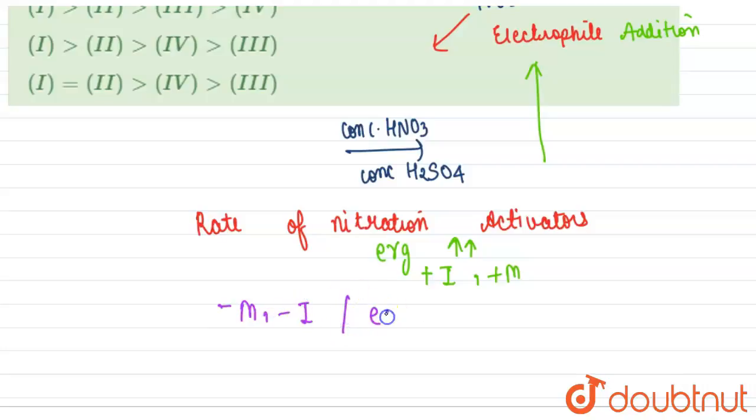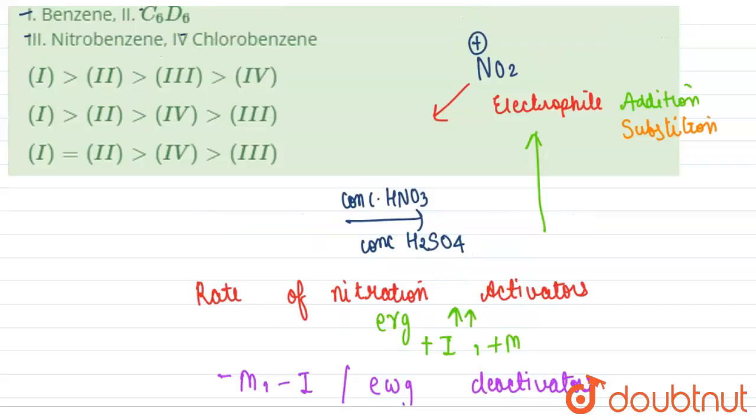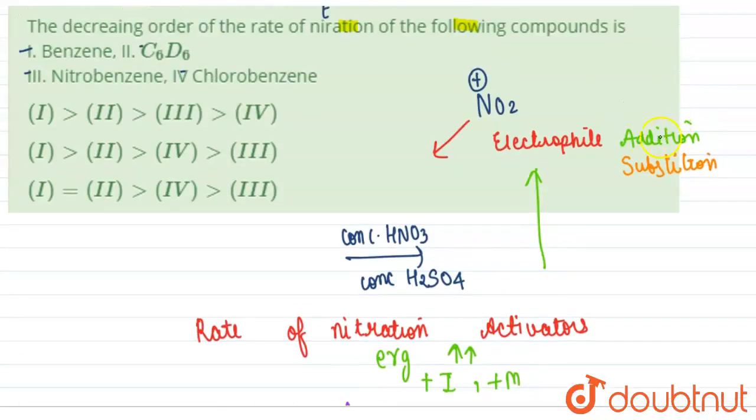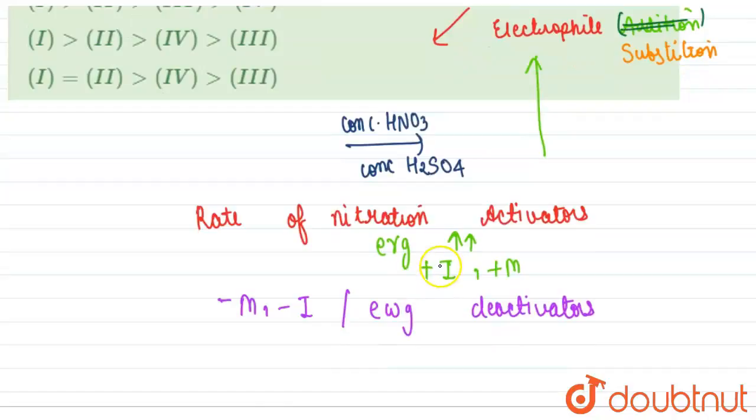They will act like deactivators for electrophilic substitution. Nitration is electrophilic substitution. So as we can see, groups that show minus M effect are NO2 group. Nitrobenzene will have the least rate.